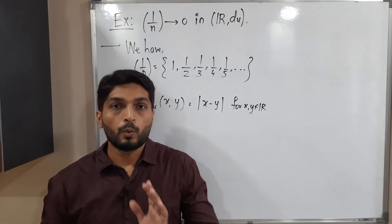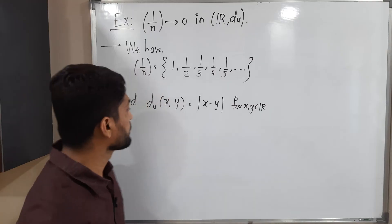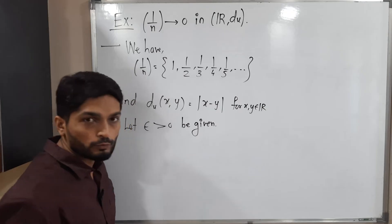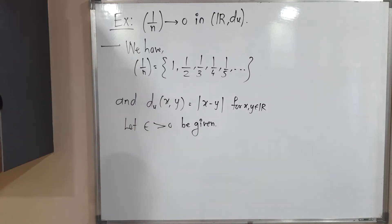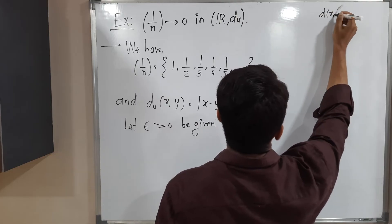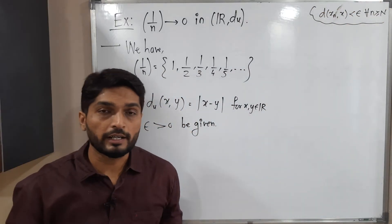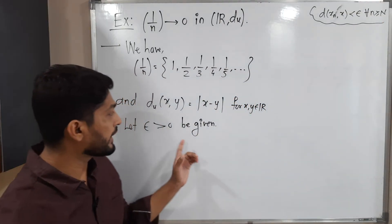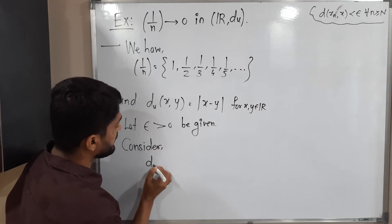Let epsilon > 0 be given. Our target is to find capital N which satisfies the definition. Writing the definition: D(X_n, X) < epsilon for all n ≥ N. Since D is d_u, we write d_u(X_n, X) = |X_n − X|. Here X_n = 1/n and X = 0, so this equals |1/n − 0| = |1/n| = 1/n, since 1/n is already positive for natural number n. Let us call this equation (1).